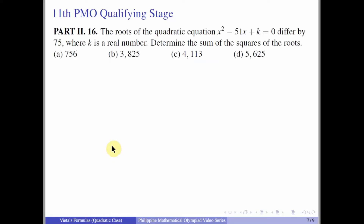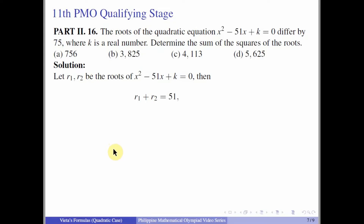From the 11th PMO qualifying stage, Part 2, Number 16: The roots of x² - 51x + K = 0 differ by 75, where K is a real number. Find the sum of the squares of the roots. Let R₁ and R₂ be the roots; from Vieta's formula, R₁ + R₂ = 51. The condition that the roots differ by 75 means |R₁ - R₂| = 75.